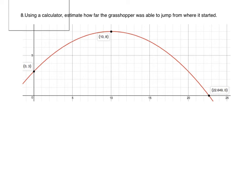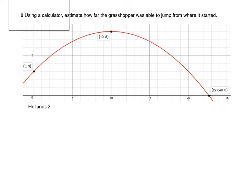Using a calculator, estimate how far the grasshopper was able to jump from where it started. Put this equation into Desmos and find where the grasshopper lands — that's where the path hits the x-axis again. The grasshopper lands at approximately 22.65 inches from his starting point.